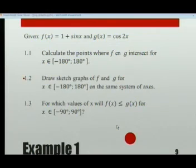Okay, so let's continue. The problem reads: Calculate the points where f and g intersect for x an element from minus 180 degrees to plus 180 degrees. Example 1 is still on that same page and we need to calculate the points where f and g intersect. So what do we know?